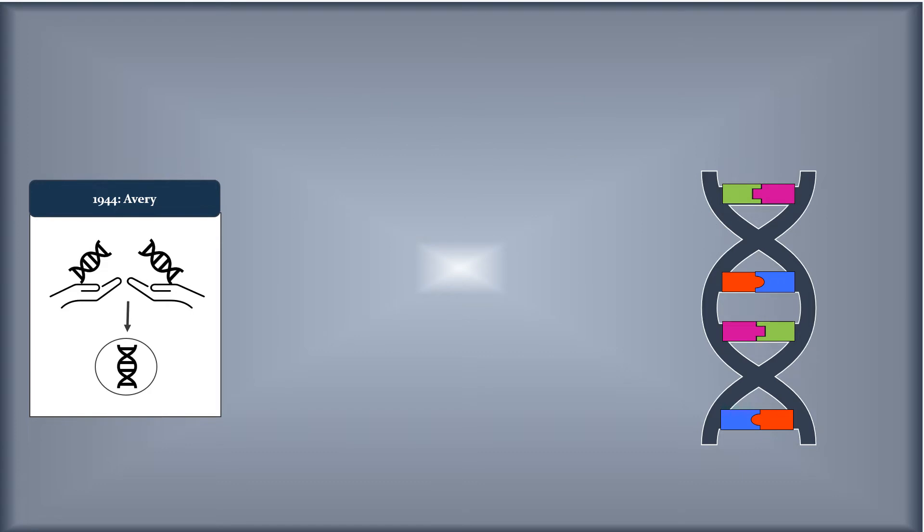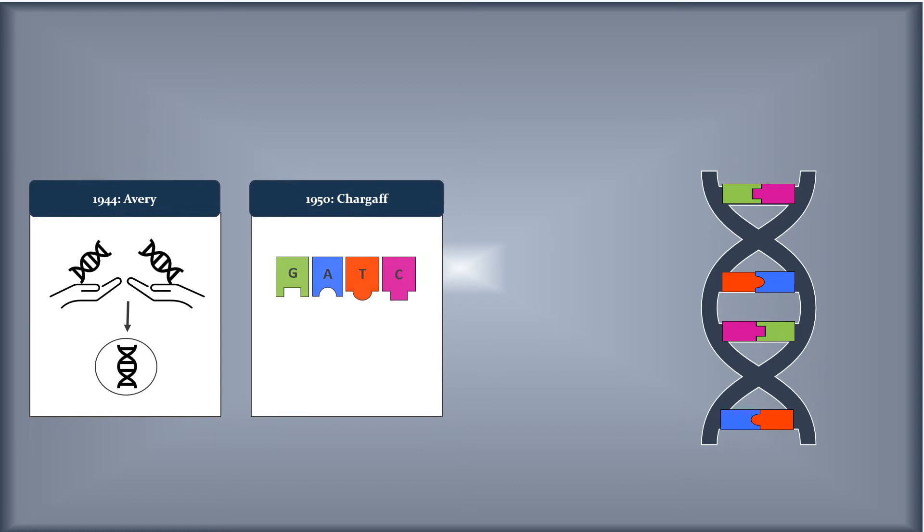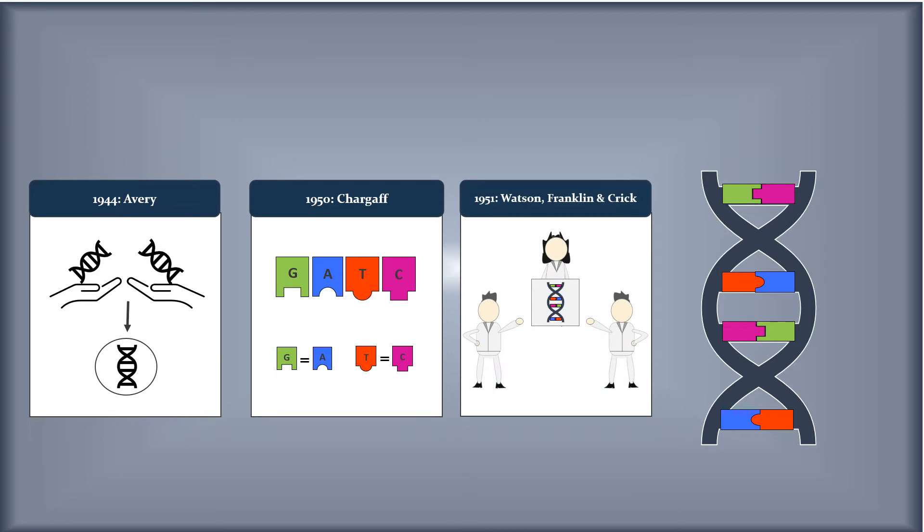Afterwards, Chargaff performed some biochemical analyses that were crucial to understand its composition. And not so long after, Franklin, Watson, and Crick elucidated its double helical assembly. As you can see, by the 50s, science was already capable of determining DNA's role, content, and structure.